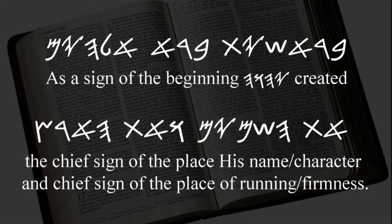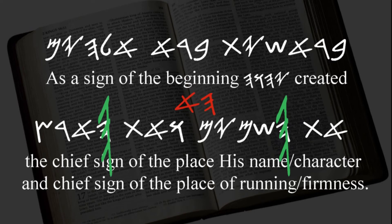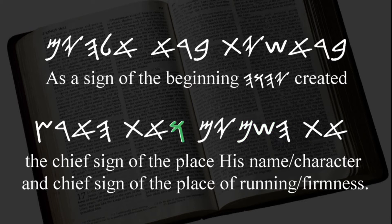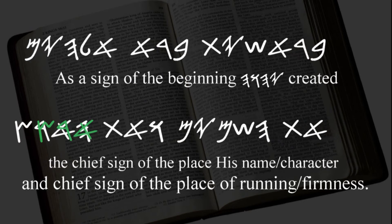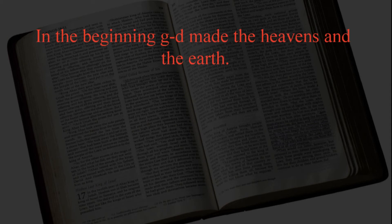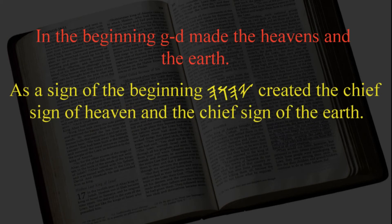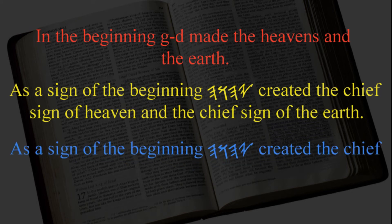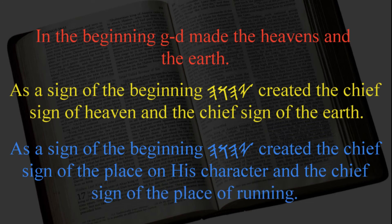This time we're going to concentrate on the second half. A chief sign of the 'Ha' — that word doesn't just mean 'the,' it means a place or location. So: a chief sign of the place of his name or character, 'Shom,' and the chief sign of the place of running or firmness. You'll see all three versions: 'In the beginning, G.O.D. made the heavens and the earth'; 'As the sign of the beginning, Yahweh created the chief sign of the heaven and the chief sign of the earth'; and 'As a sign of the beginning, Yahweh created the chief sign of the place of his character and a chief sign of the place of running.' All three are true, just getting more in depth.